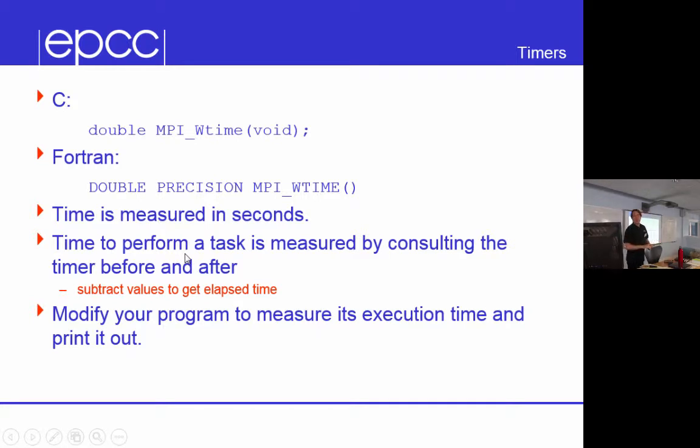Just a hint here: anything under a second is a meaningless time. You can't time anything less than a second. So you can't time the calculation of pi - it'll take milliseconds. If you want to time your program, you have to compute pi a billion times or something. If the times you're printing out are less than a second, they are meaningless - they're dominated by noise and garbage.